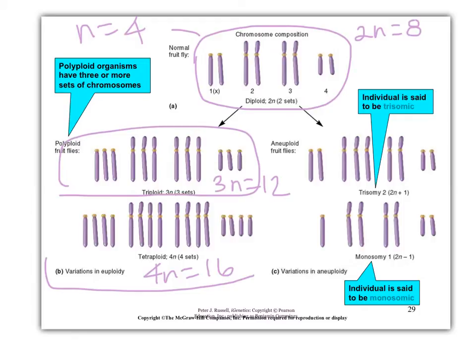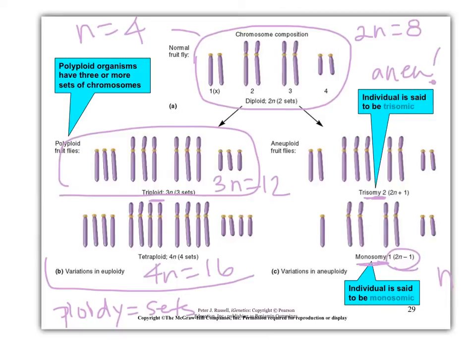Trisomies and monosomies refer to aneuploidy. You use '-some' or '-somy' for aneuploid conditions. You wouldn't want to call a monosomy 'monoploid,' because that would suggest a haploid — and it's not. It's actually a diploid missing one chromosome. So you have to be careful with the terminology.